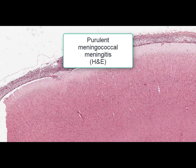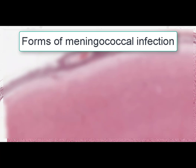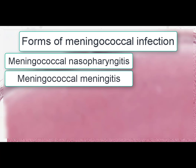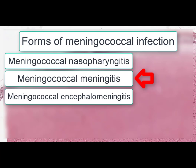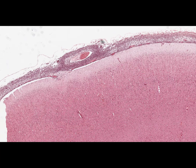On this slide we can see a brain tissue with meninges. The stain is hematoxylin and eosin, and the name of the slide is purulent meningococcal meningitis. Generally there are the following forms of meningococcal infection: meningococcal nasopharyngitis, meningococcal meningitis, meningococcal encephalomeningitis, and finally meningococcal sepsis. At meningococcal meningitis, the pia mater is affected in the form of purulent inflammation.